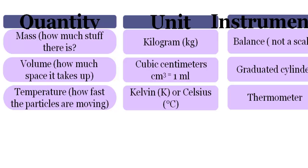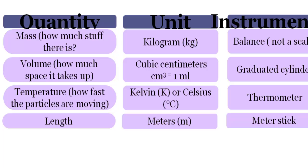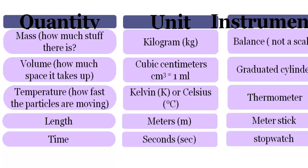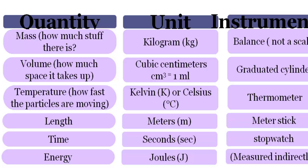Temperature is measured with the thermometer. In the lab we measure it in degrees Celsius, which we later convert to Kelvins because that is the SI unit of measurement. Length is measured in meters using, of course, a meter stick. Time is measured in seconds using the stopwatch or an app on your iPad. Energy is measured in joules, and it is measured indirectly — we'll talk about that much later in the course. Pressure, another unit we will refer to much later, is measured in pascals, and we can use a barometer and then make conversions to pascals.